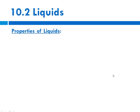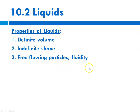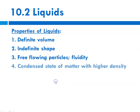Liquids, in general, have a definite volume and an indefinite shape. They are free-flowing, so their particles can move freely between one another — that's what gives them their fluidity. They are able to roll over one another. They are a condensed state of matter with higher density than a gas, and they are relatively incompressible.